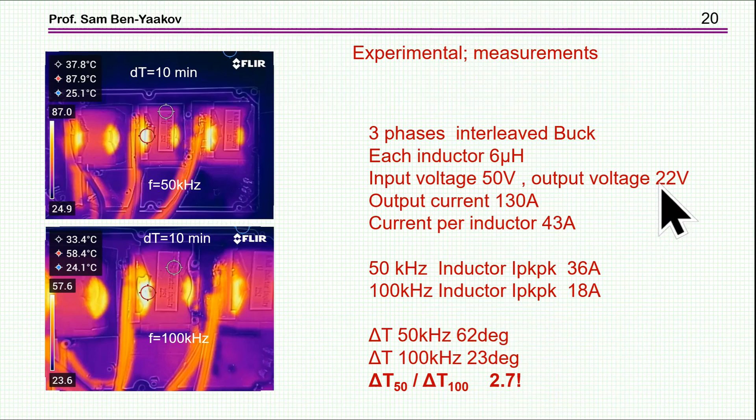Each inductor is 6 microhenry. The input voltage is 50 volts. The output is 22, so the duty cycle is about 0.5, which is like almost the maximum ripple for a single inductor.